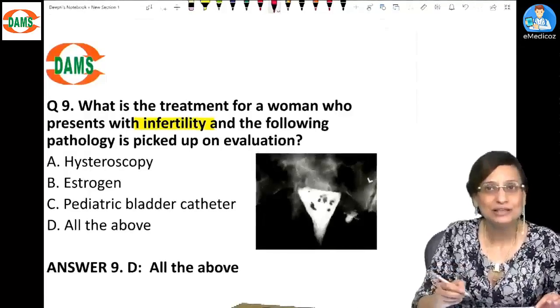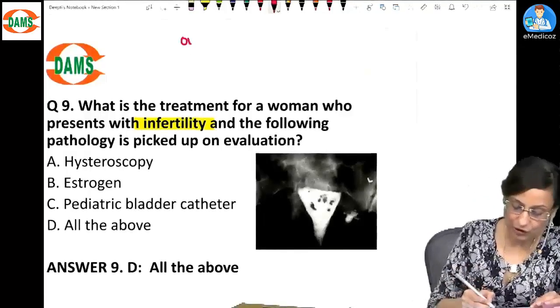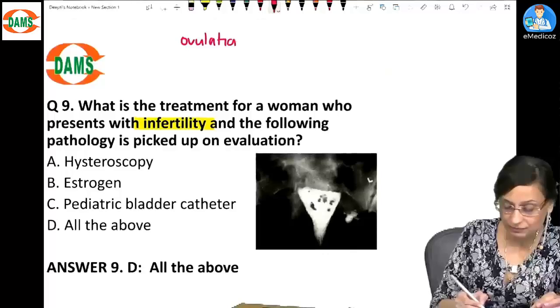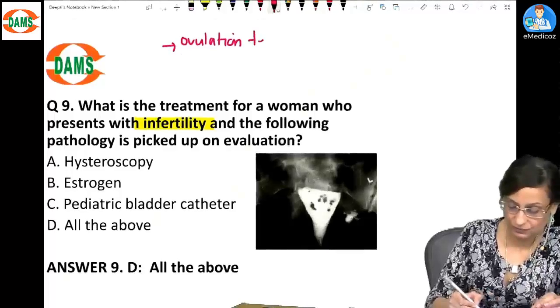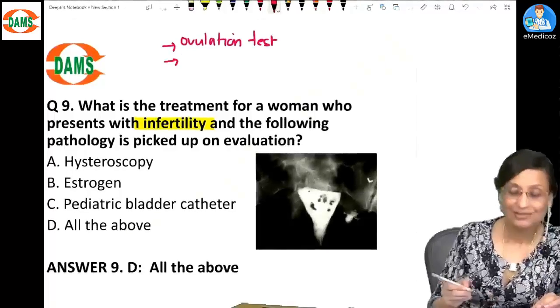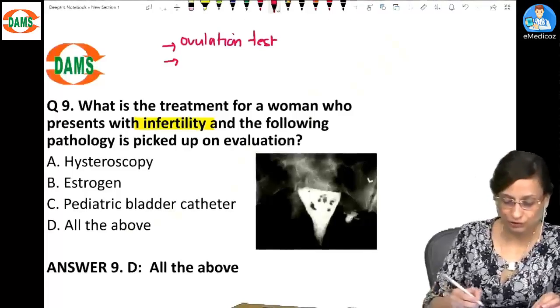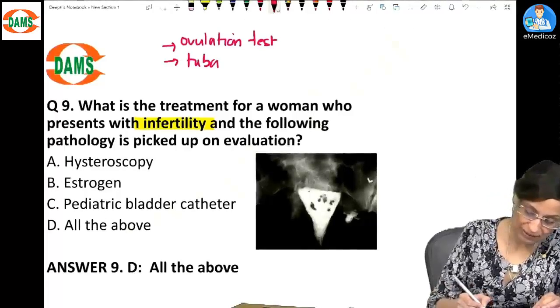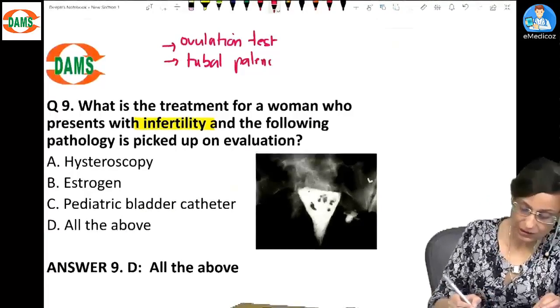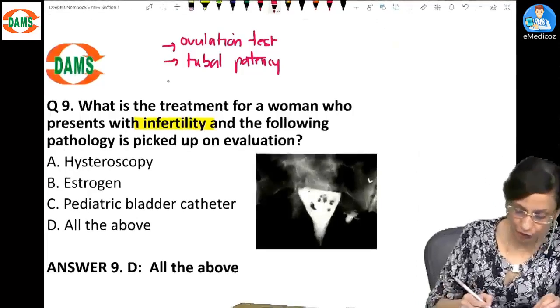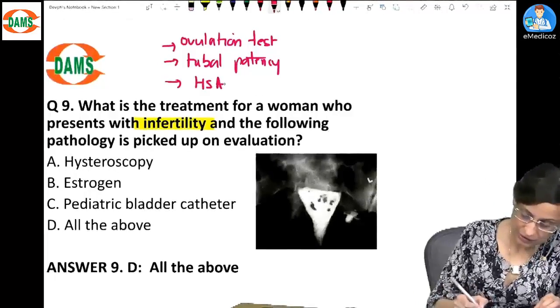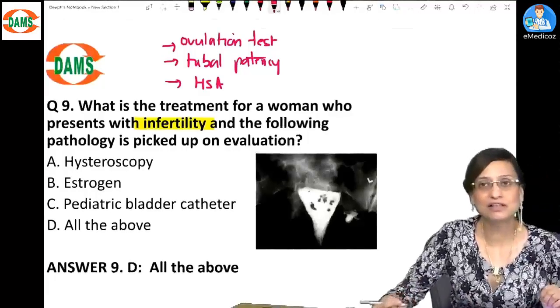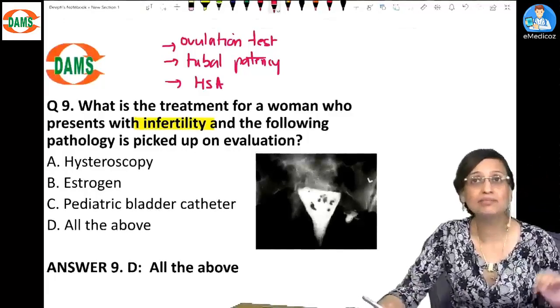In the females we will look for ovulation. What else? You are going to look for tubal patency. And in the males you are going to look for semen analysis of the male partner. These are the basic investigations we must do.